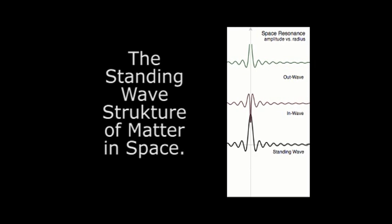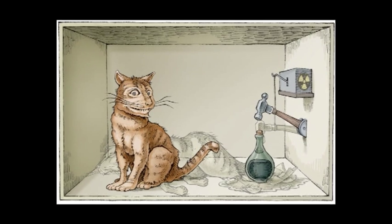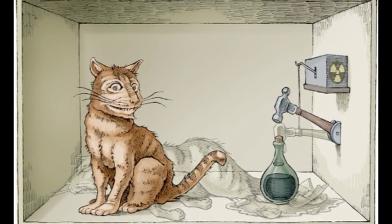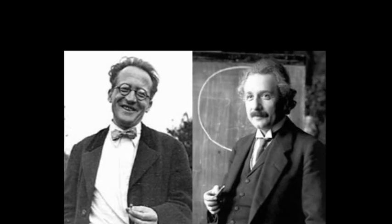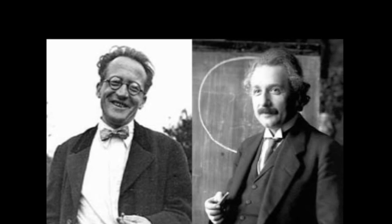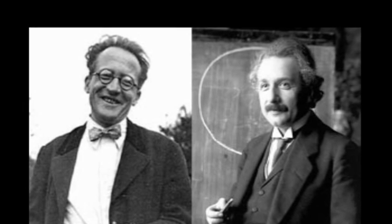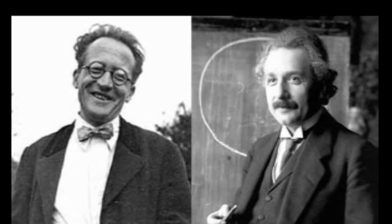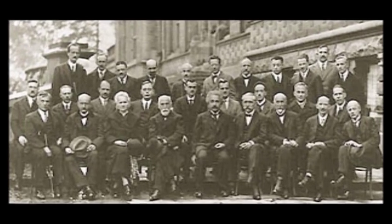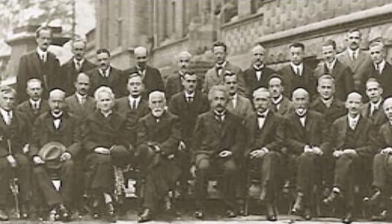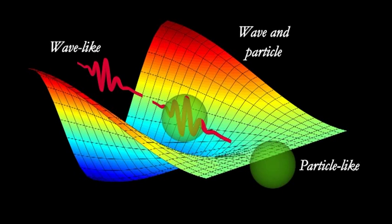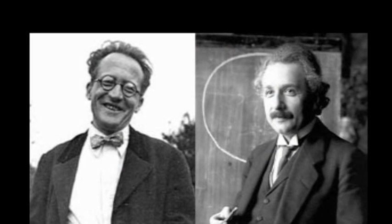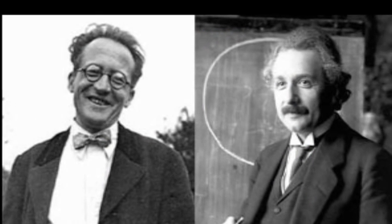The standing wave structure of matter in space has been a theory since Erwin Schrödinger's time. Schrödinger and Einstein had the idea that point-like particles weren't really particles, but just waves in space. As many know, the Copenhagen Interpretation of Quantum Mechanics won, saying that photons and electrons are both particles and waves. Even today it is the most favored theory amongst quantum theorists. But what if Einstein's and Schrödinger's ideas were correct?